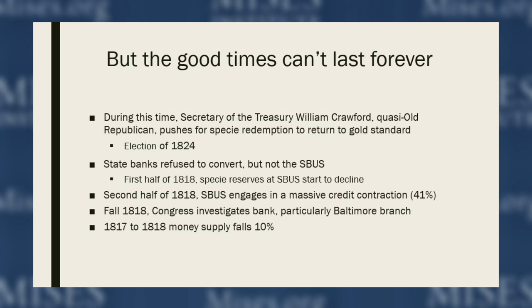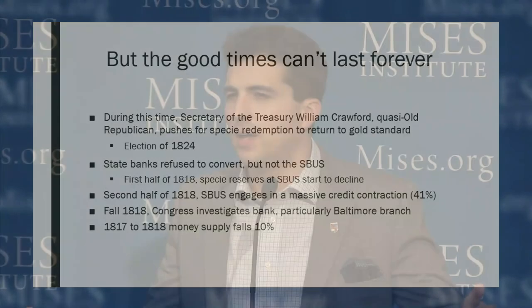The credit expansion was unsustainable — the bank would run out of gold. In the second half of 1818, the Second Bank engaged in a massive credit contraction. From about July 1818 to January 1819, the bank's liabilities contracted by a whopping 41%. They weren't renewing loans; they were calling in loans and trying to beef up their reserve ratio. To make matters worse, in the fall of 1818 Congress investigated the bank, particularly the Baltimore branch, amid accusations of odd behavior. This contraction was so large that from 1817 to 1818 the money supply fell 10% — you're starting to see the bubble pop.